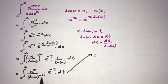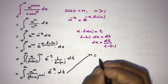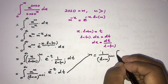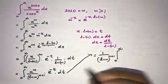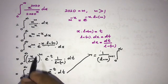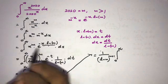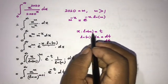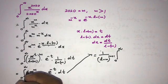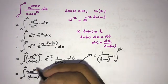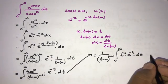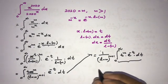We can factor out 1 over natural log of m to the m plus 1 outside of the integral. This gives us 1 over natural log of m to the m plus 1, times the integral from zero to infinity of t to the m times e to the minus t dt.